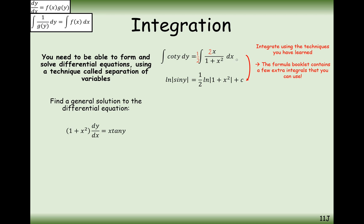You'll notice we've only added c onto one side. Effectively what you would do is add constants to both sides, but you can group them together on one side. Say we add constant a on one side and constant b on the other — we can combine them into one single constant. So when solving differential equations you only need to add c onto one side.